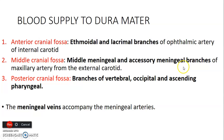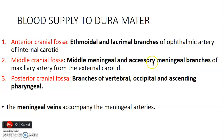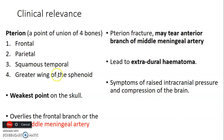So the dura mater receives supply from both the internal and external carotid arteries. The posterior cranial fossa gets branches from the vertebral artery — which is from the first part of the subclavian — as well as the occipital artery and ascending pharyngeal artery, both from the external carotid artery. The meningeal veins accompany these arteries. That is how you answer the question on blood supply to the dura mater.